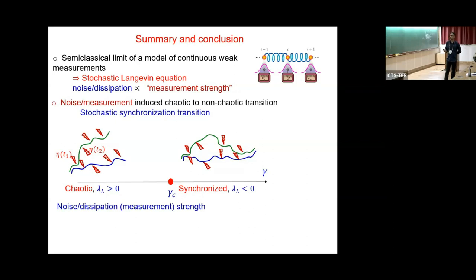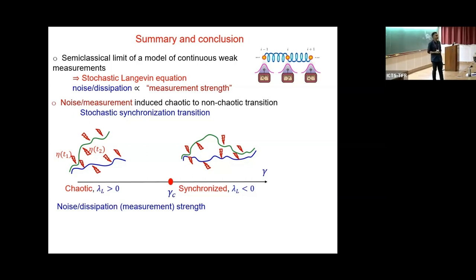Let me end with the summary. What I tried to show is that you can start with a very generic continuous quantum measurement model and derive a stochastic Langevin equation that looks like any standard Langevin equation obtainable from a Caldera-Leggett-Bath model. This system has a synchronization transition — a very generic transition. In this particular quantum model, the parameter controlling the transition — the noise — is the same as the measurement strength. The open question is how to add the quantum axis and see how the entanglement transition in the quantum limit connects to this classical synchronization transition.